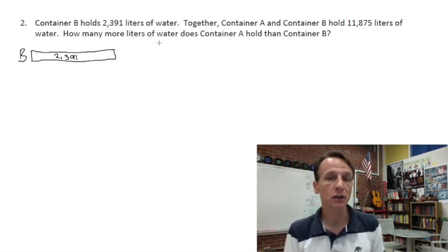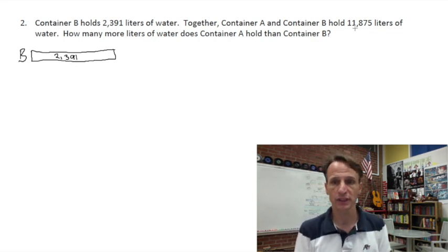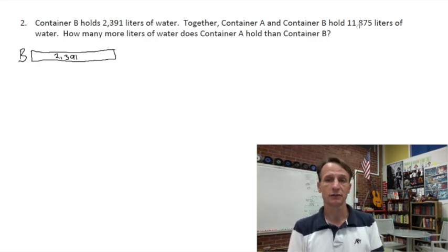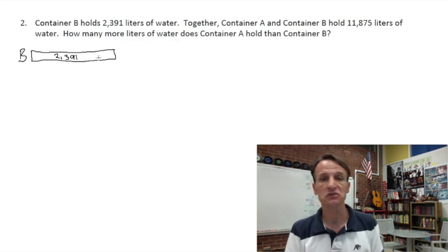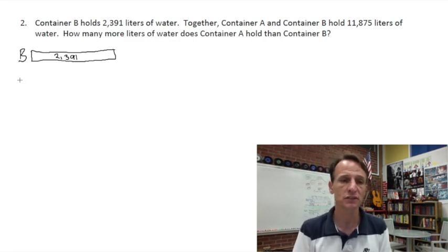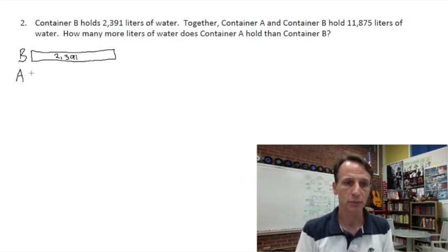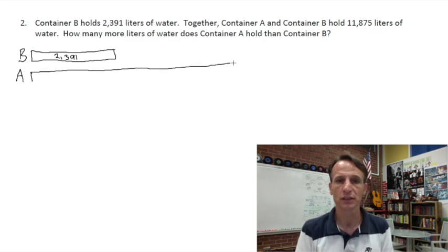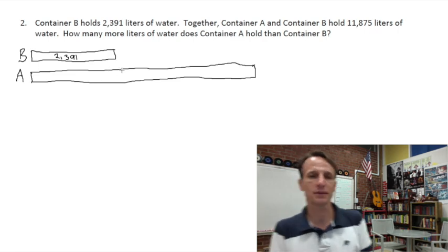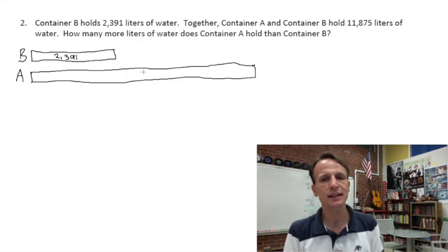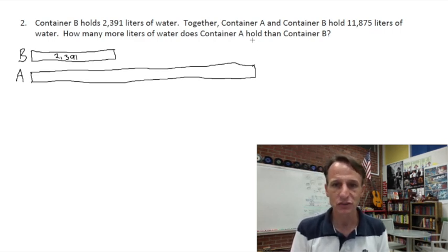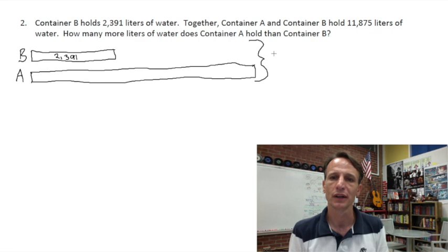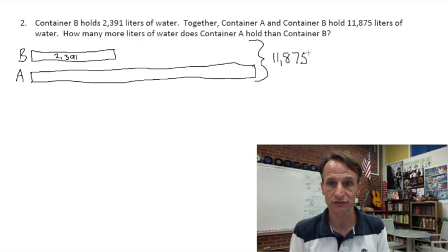And now we'll make a comparison with our question. How many more liters of water does container A hold than container B? So there's a lot going on here. The thing that is obvious and simple, let's start with this tape diagram, is we know B. B is just a given, right? Okay, so let's draw a nice simple tape for B, and we know this is 2,391 liters.